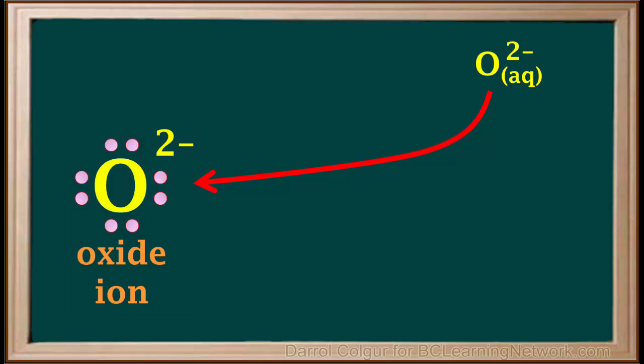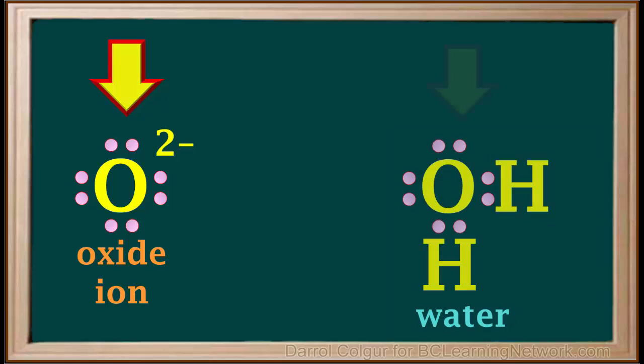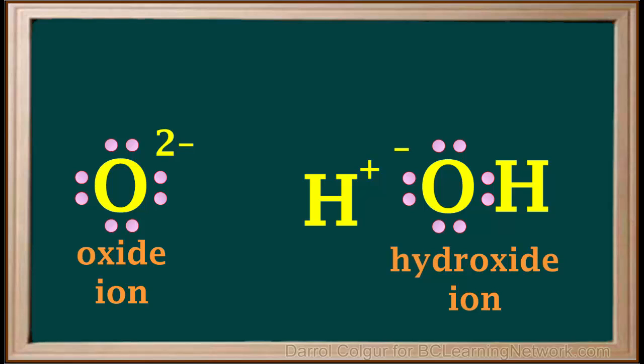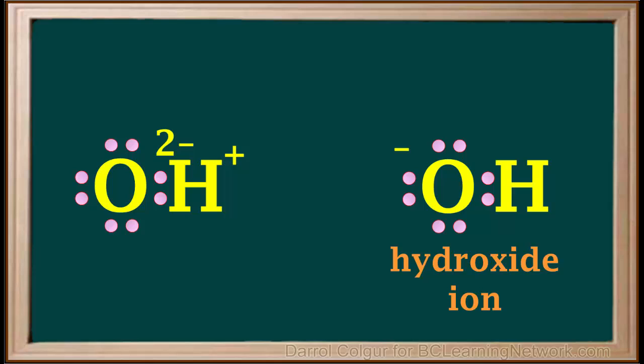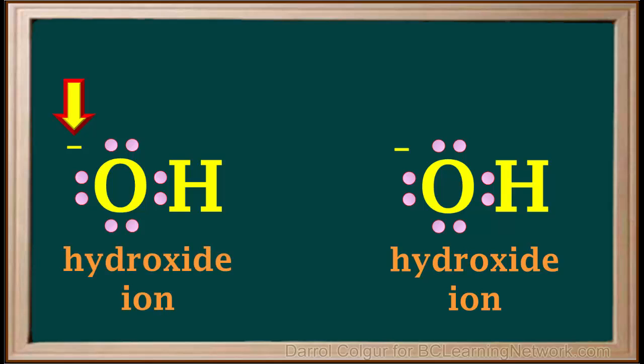Here's the Lewis structure for the oxide ion. Normally Lewis structures of ions have brackets surrounding them, but we've left the brackets out here for simplicity. When a dissolved oxide ion comes in contact with a water molecule, the oxide ion, being a strong base, removes a proton from the water molecule, leaving it as a hydroxide ion. The proton is transferred to the oxide ion. The net charge on the resulting ion is -2 plus +1, which comes out to -1. So this is another hydroxide ion.